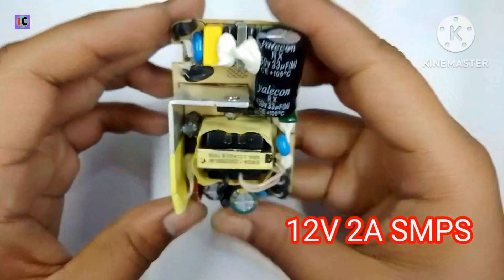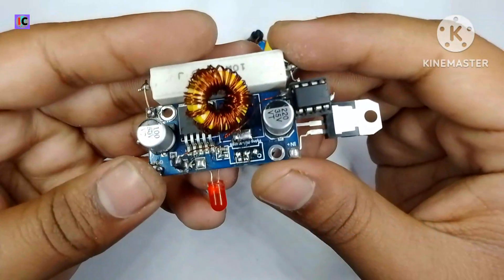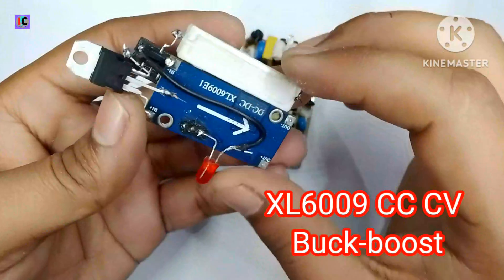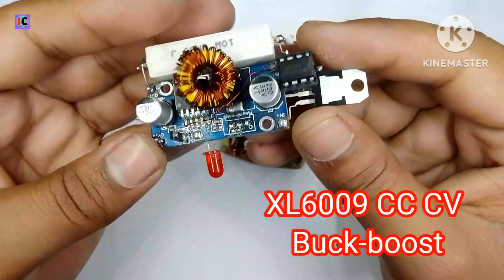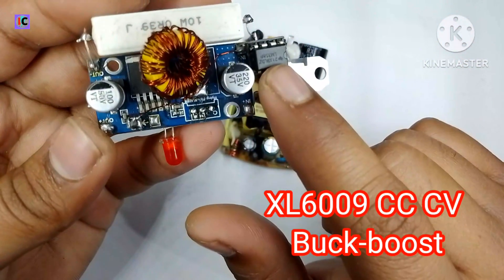So here this is the 12 volt 2 ampere SMPS and this is the modified version of the XL6009 boost converter, and I have converted it into constant current as well as buck-boost mode.